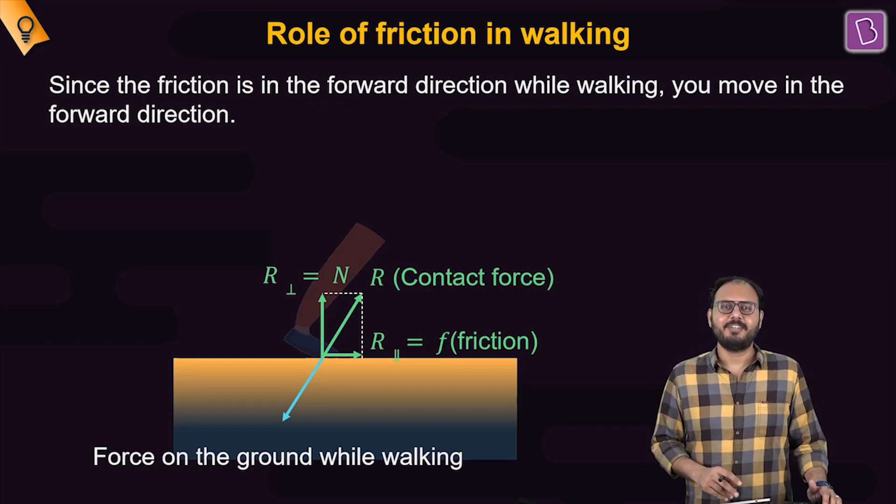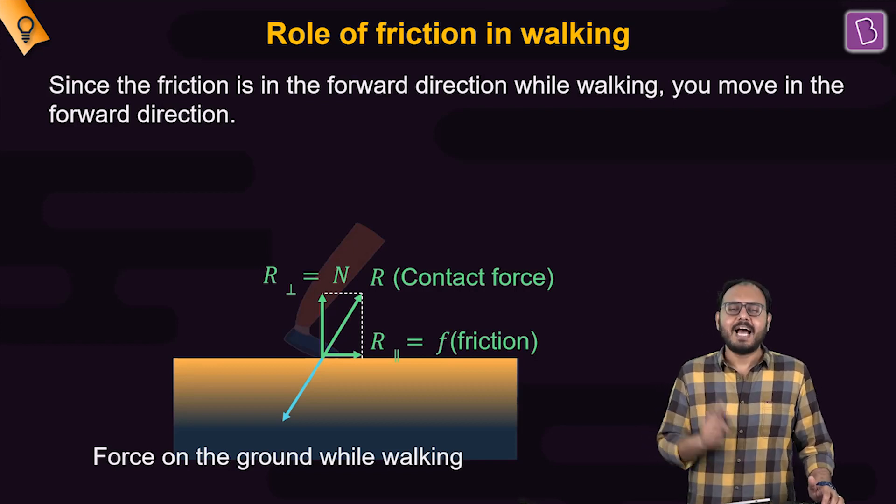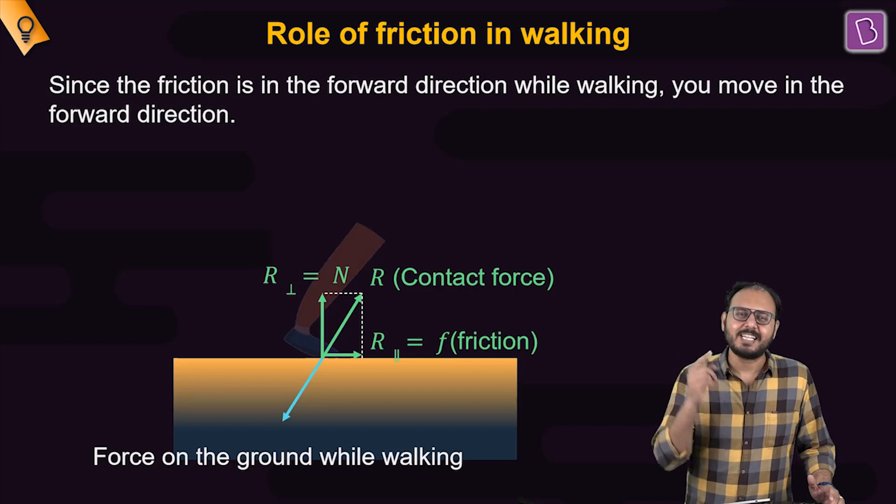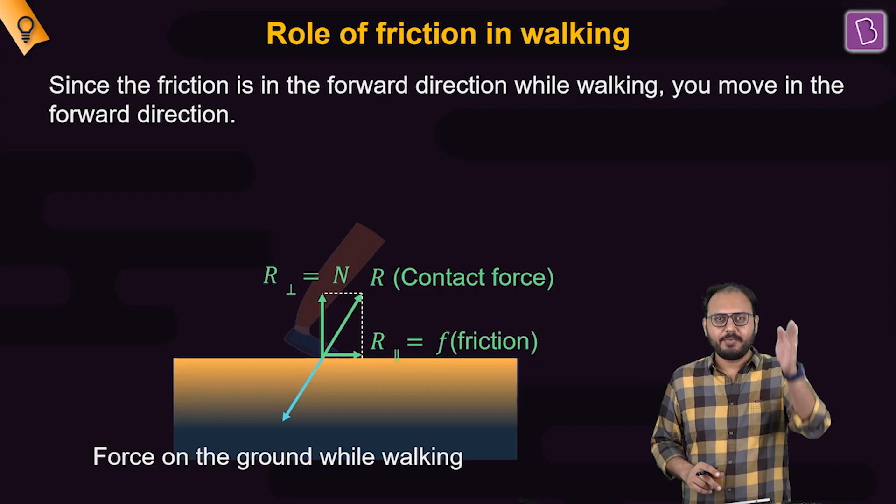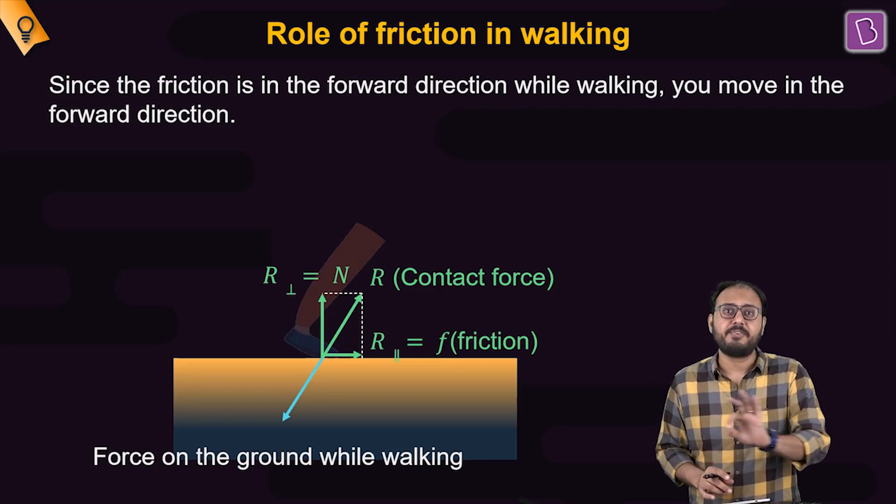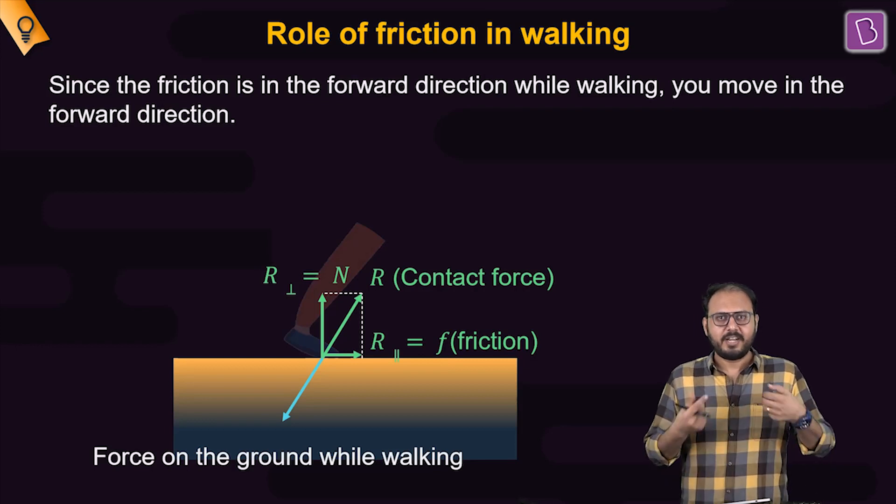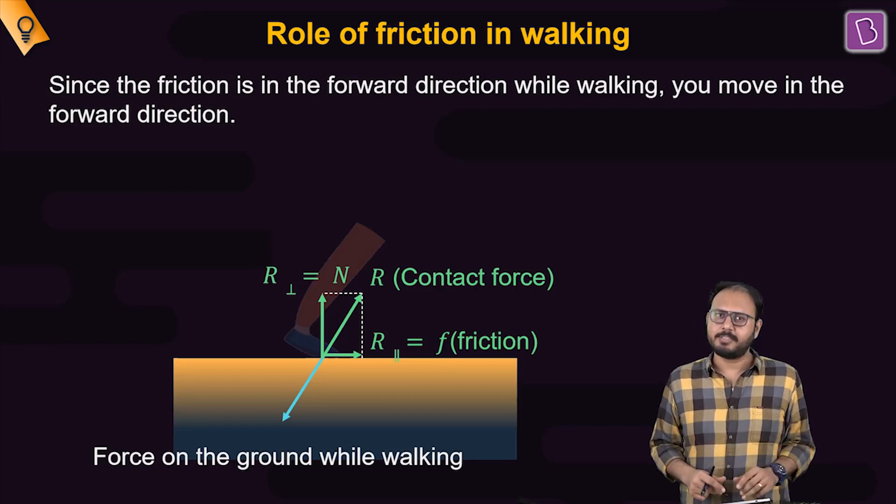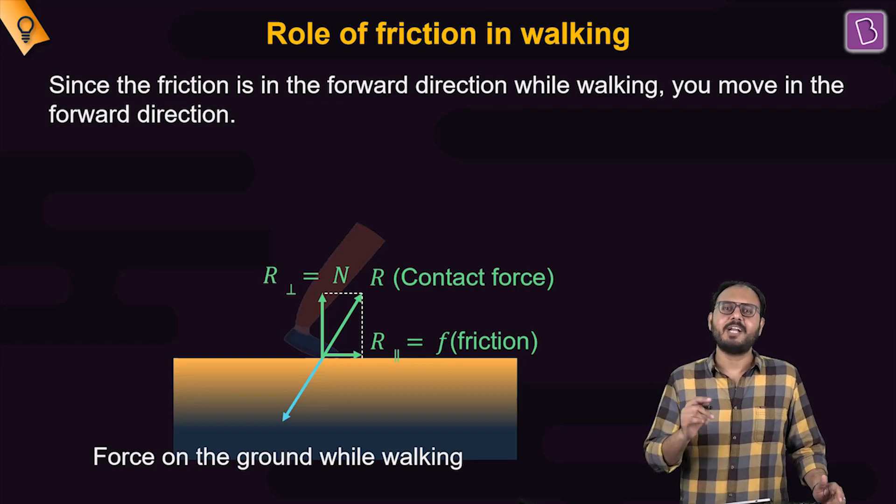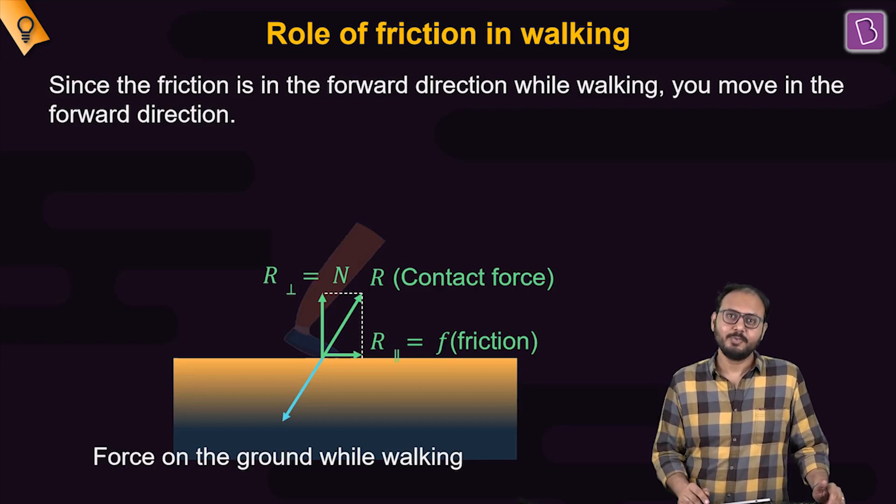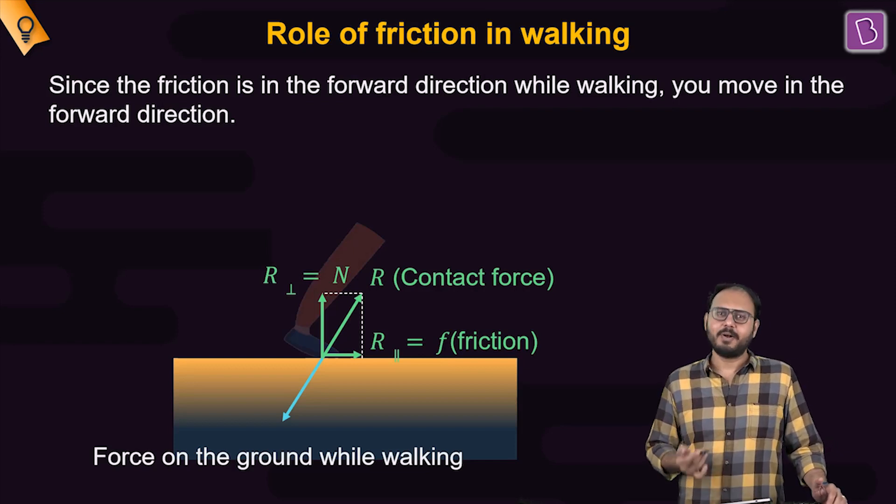If you have a Ferrari, McLaren, Maserati, Lamborghini, but the surface on which it is kept is completely frictionless and there is zero friction, then you can rev up the car. It will not go forward. Because friction is the reason why it goes forward. Do you understand? We will talk more about it as we go along. Poor guy, isn't it?